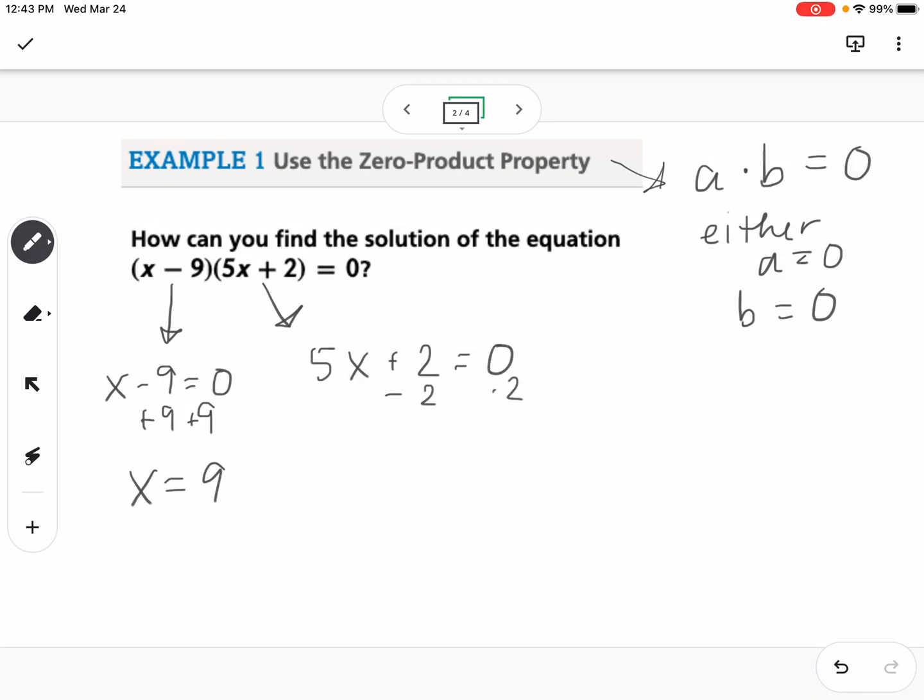I can subtract 2, so I get 5x equals negative 2, and then divide by 5, so x equals negative 2 fifths. Just like with our last lesson, the two values that I just found are my x-intercepts, or where my graph crosses the x-axis. Those are my solutions.